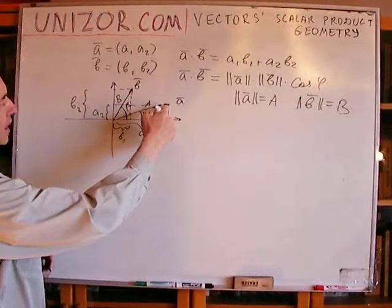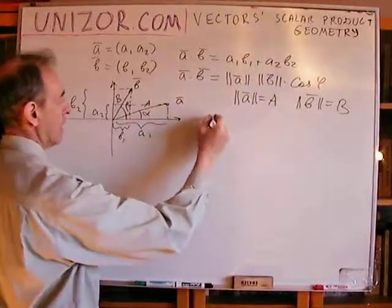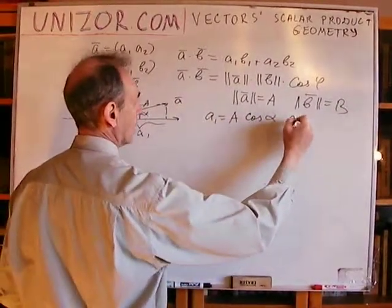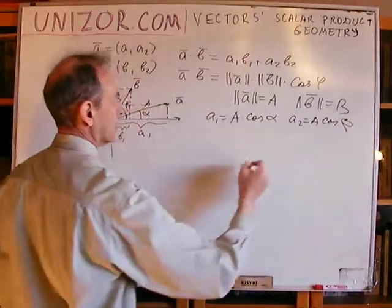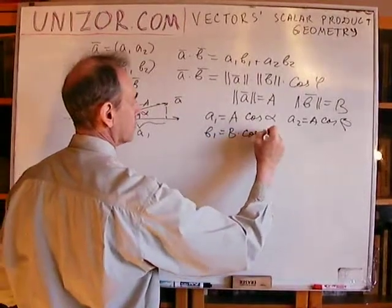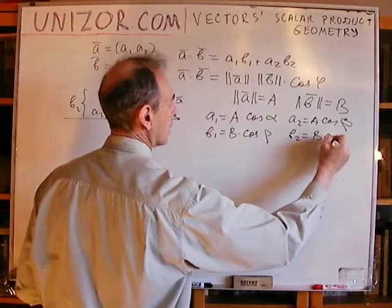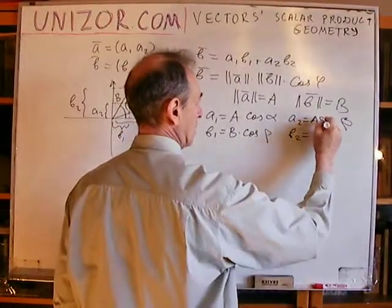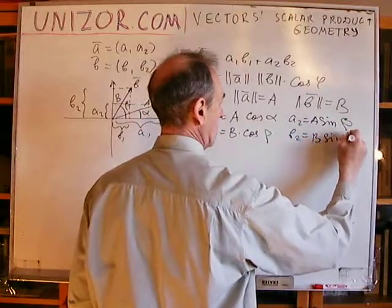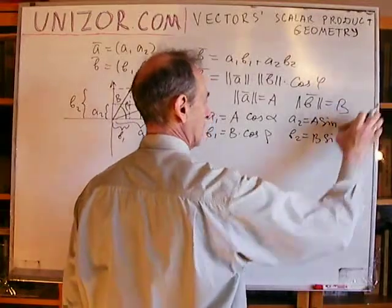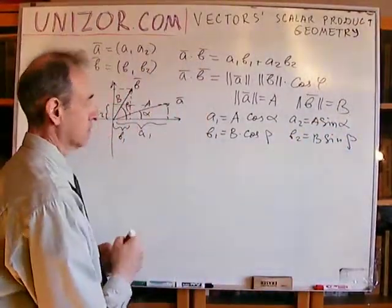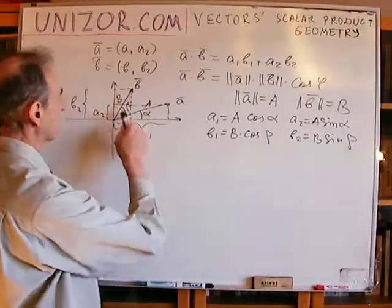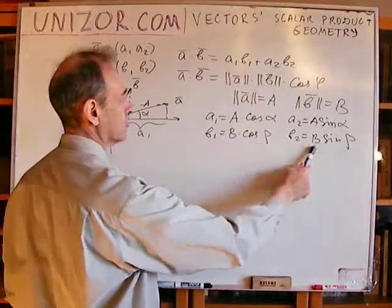I can express coordinates in terms of lengths and angles very easily. If the length of vector A is A and the length of vector B is B, then dropping perpendiculars gives: A1 = A·cos(α), A2 = A·sin(α), B1 = B·cos(β), and B2 = B·sin(β).